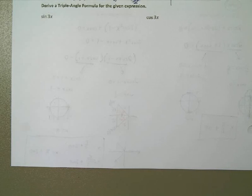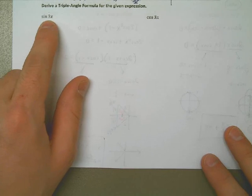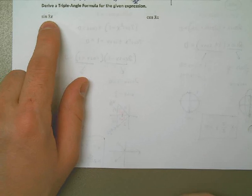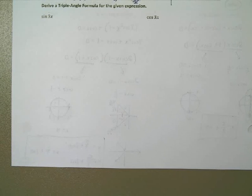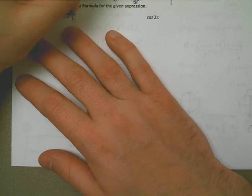Prepare to have your mind blown. We're going to derive a triple angle formula for this expression here. We talked about how to do sine of 2x — we're given a formula for that, but we don't have anything for 3x. Here's what we can do in order to figure out what the sine of 3x is: rather than sine of 3x, we're going to call that sine of 2x plus another x, because 2x plus x is 3x.